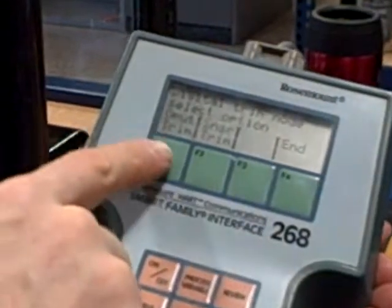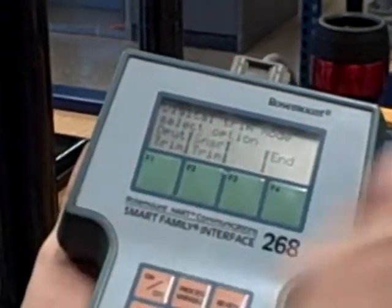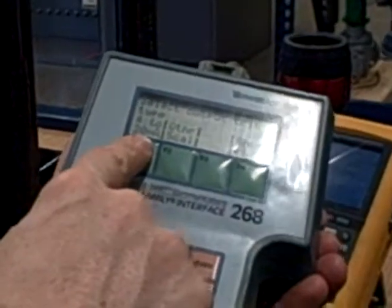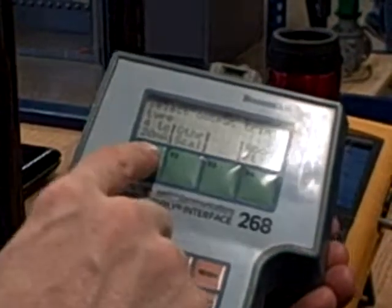I want to now do an output trim. I'm going to trim the D-to-A converter on the output of that transmitter. So I hit the output button. Select the output trim type. You want 4 to 20 milliamps or some other scale? Well I want to do 4 to 20 milliamps.